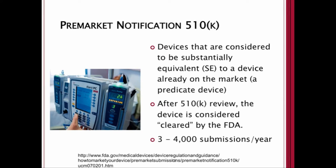Pre-market notification through the 510K process applies to devices considered substantially equivalent to a device already on the market — a predicate device. After 510K review, the device is considered cleared by the FDA. The FDA receives roughly 3,000 to 4,000 submissions through the 510K process per year.